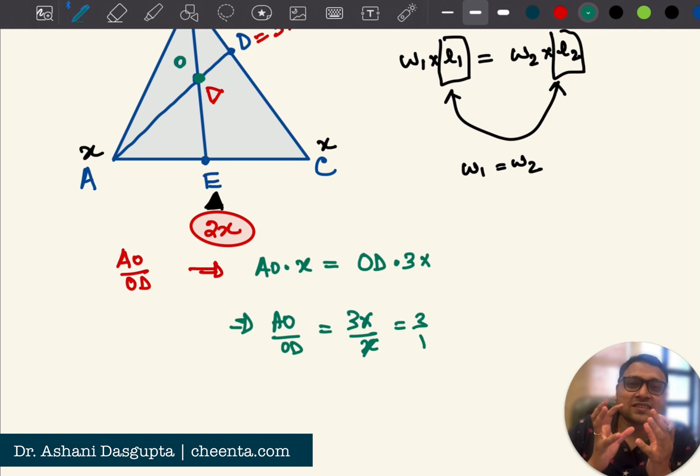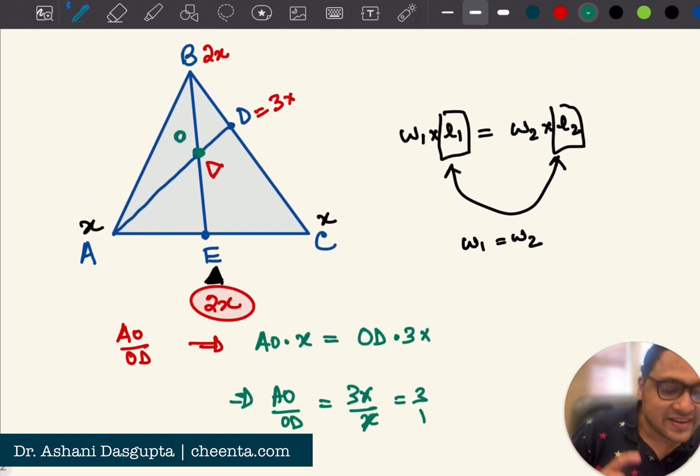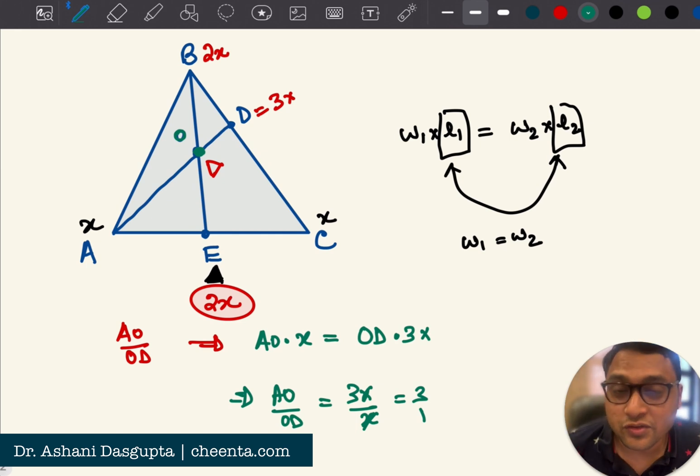We just used the barycentric coordinates to quickly find out the ratio of AO is to OD. Now there is a very interesting theory behind barycentric coordinates. We use Ceva's theorem and Menelaus's theorem to make everything concrete. So maybe you can look into the Math Olympiad program at Cheenta for more detail regarding this. We discuss it in more detail.